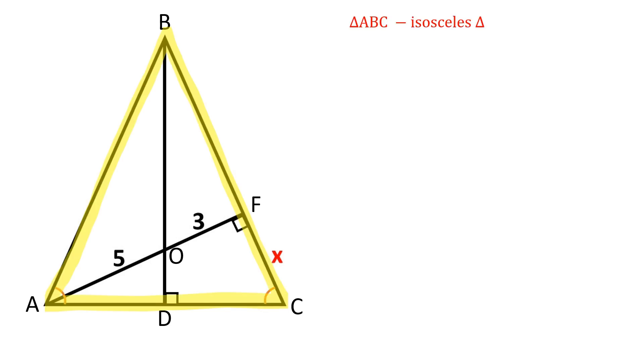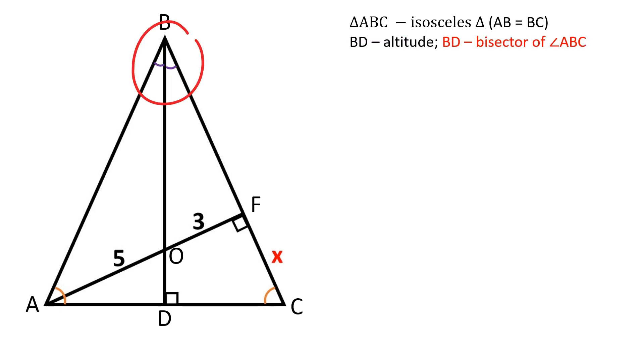Triangle ABC is an isosceles triangle. AB is equal to BC. Since BD is an altitude drawn to the base of an isosceles triangle, BD is also the bisector of angle ABC.